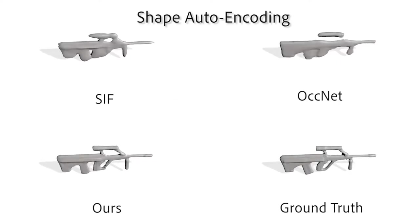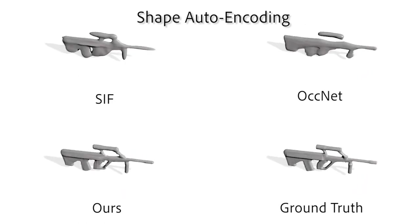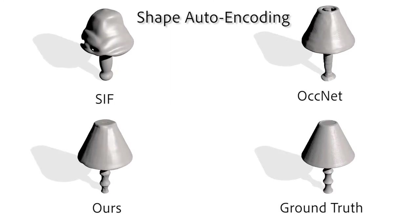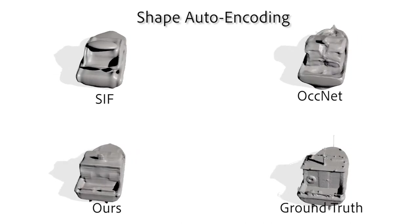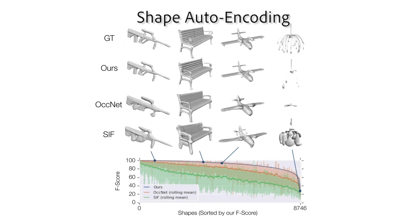For the first experiment, we evaluate autoencoders for each representation trained on ShapeNet. The goal is to determine how detailed and accurate each representation can be. The target mesh is shown alongside a mesh extracted from each representation. We find that LDIF can improve over the state-of-the-art F-score by 10 points with only 0.4% of the decoder parameters. To avoid bias from individual examples, we also plot results for every example in the dataset sorted by F-score. We see that our reconstructions are the most accurate for 93% of examples.